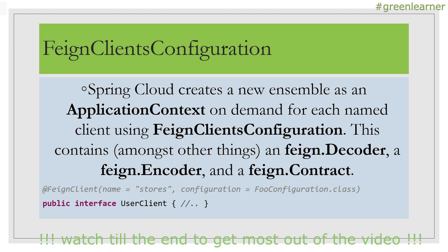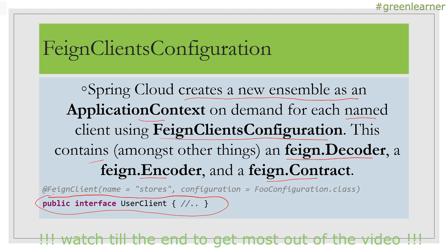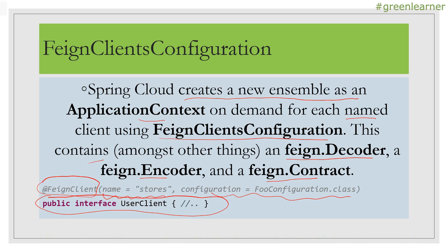For Feign client configuration: Spring Cloud creates a new application context on demand for each named client using FeignClientsConfiguration. This contains a Feign decoder, Feign encoder, and Feign contract. You can see the interface with the @FeignClient annotation, the name which is mandatory to provide, and the configuration it takes. It is better to understand this through an example, so let's move ahead.